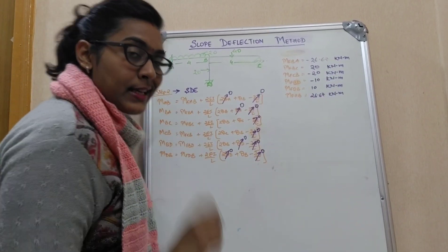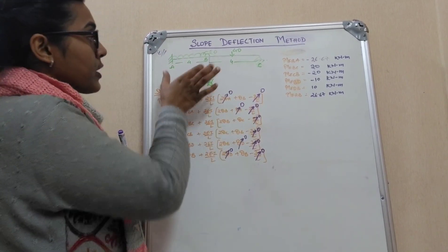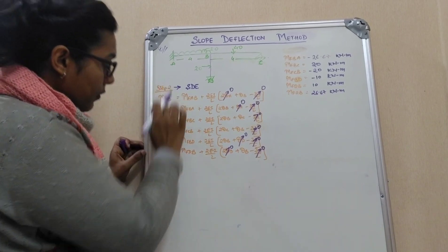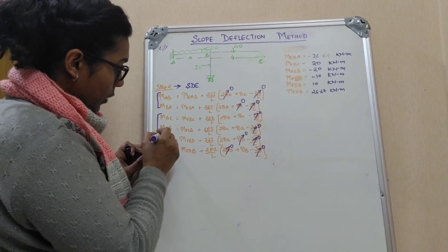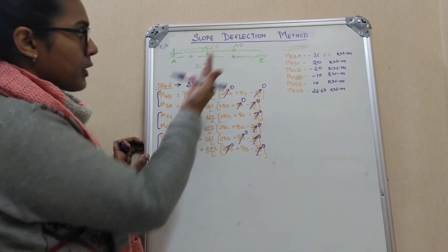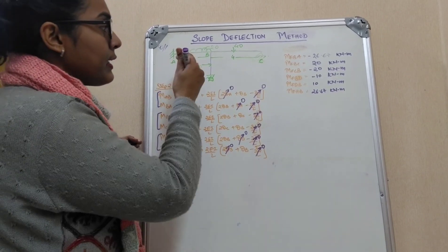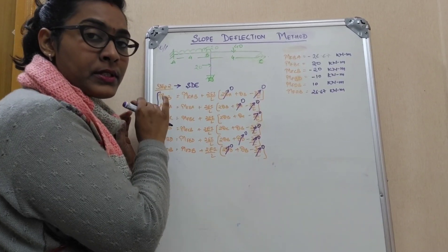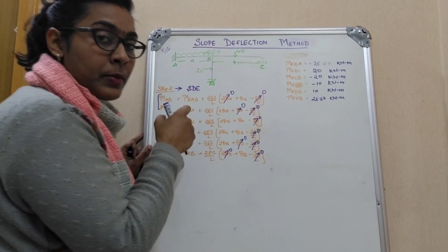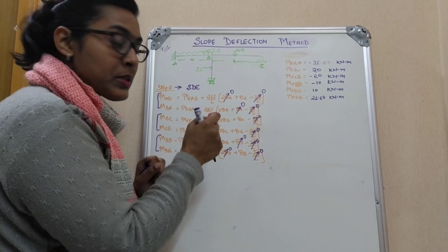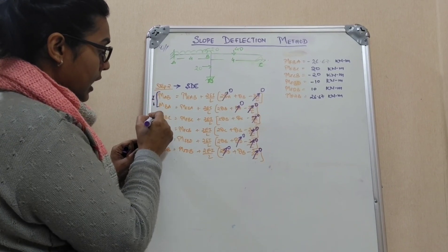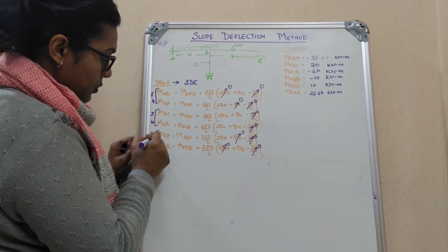A common student mistake is when different rigidities are given — for example if span AB has 2I and another span has a different I value. A simple trick: when writing the equations, note the length L and the given EI for each member and substitute them correctly. In this problem all lengths are 4 meters and EI is constant, so we need not worry. We simply substitute and identify the terms.